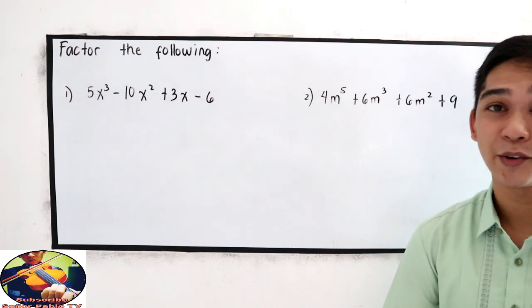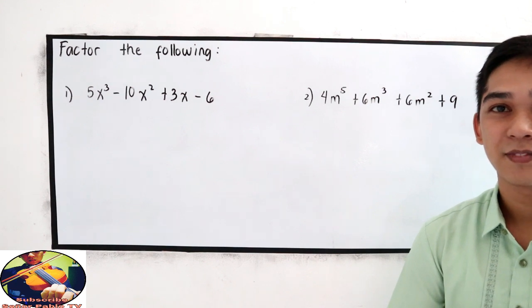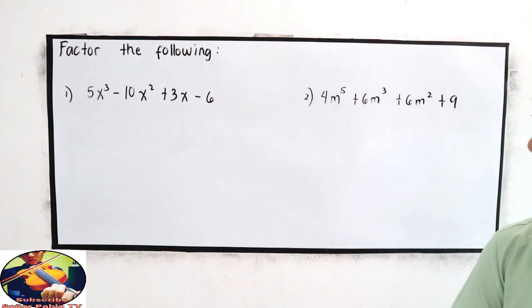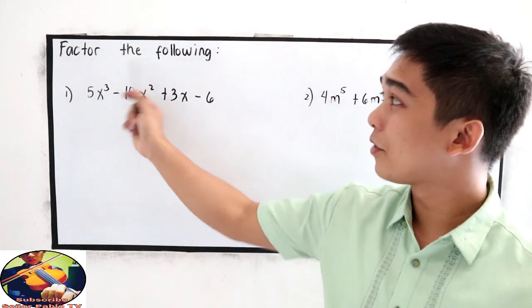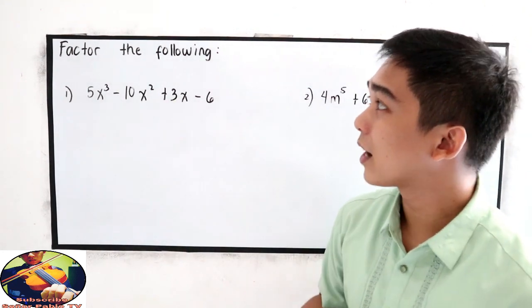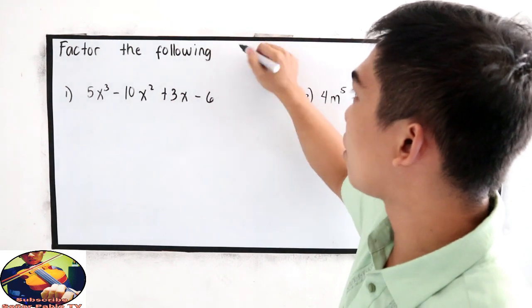So this is factoring by grouping. If you are done, let's solve number 1, our factor developing completely.